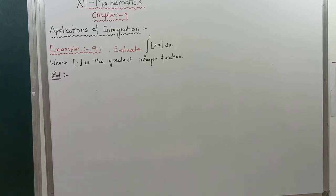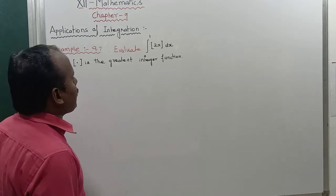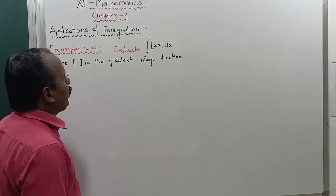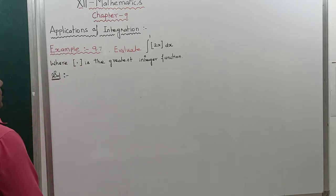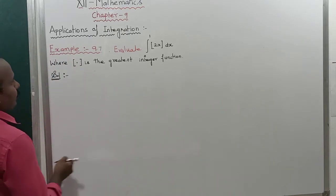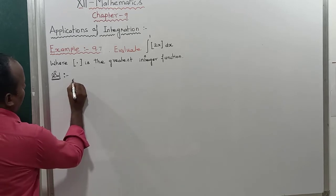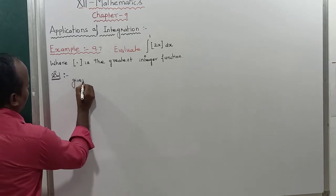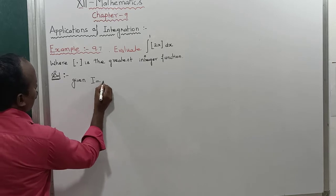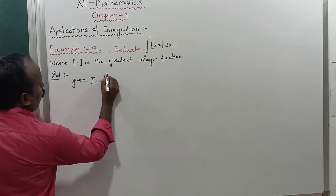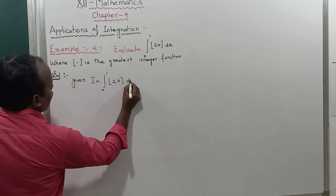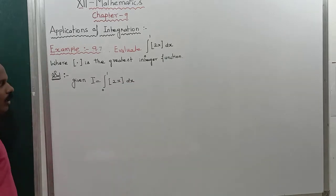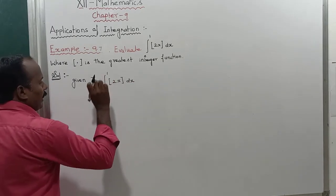Example 9.7: Evaluate the integral from 0 to 1 of the greatest integer function of 2x, dx. The given integration, let us consider it is equal to I = ∫₀¹ ⌊2x⌋ dx. That is the first step.